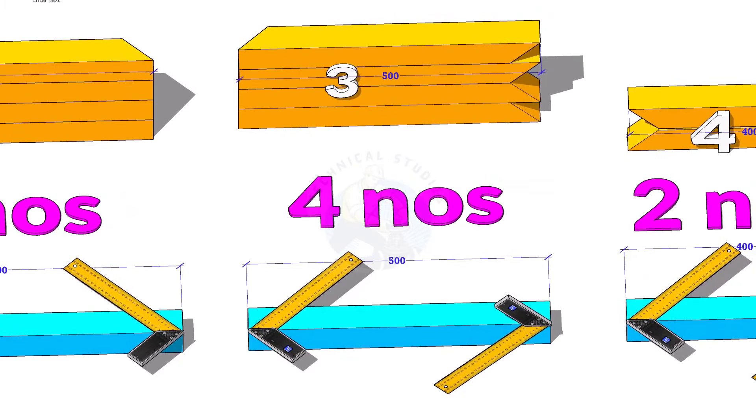Item number 3 also is 500 millimeters long. But there is a difference. Here both notches are not on the same face. Mark two pieces as shown and on two pieces on the other face.